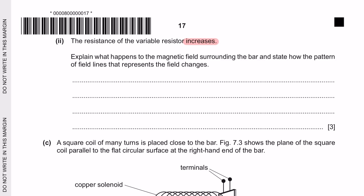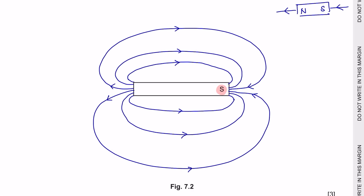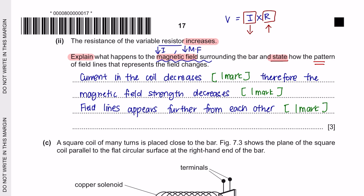Next part 2: The resistance of the variable resistor increases. Explain what happens to the magnetic field surrounding the bar and state how the pattern of field lines that represent the field changes. According to Ohm's law, resistance and current are inversely proportional, meaning that if resistance increases then current will decrease. The flow of current affects the magnetic field strength — the lower the current, the lower the magnetic field strength. If the magnetic field strength decreases, then the field lines will tend to get further away from each other. If they are closer to each other, it means there is a very strong magnetic field. So the field lines will appear further from each other.